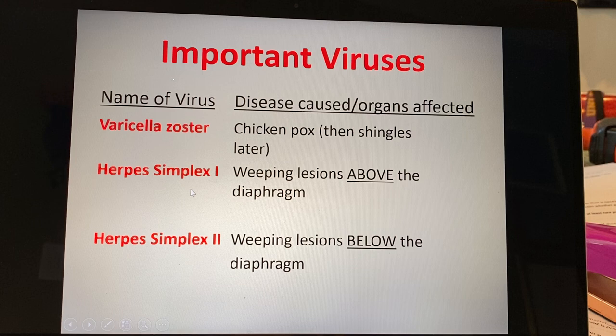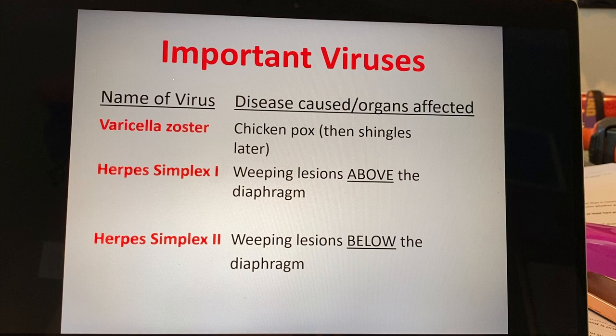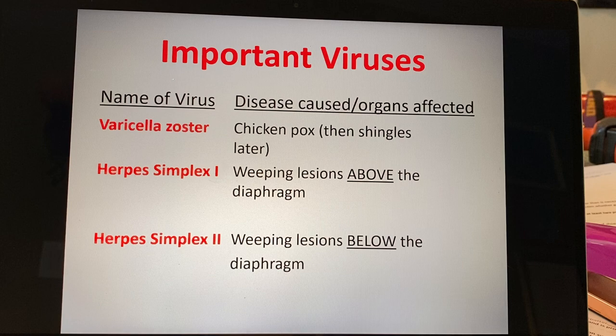Herpes simplex occurs in two major forms — simplex one and simplex two. We define these as being weeping lesions, meaning they kind of look like blisters that are full and can release liquid. When they're weeping, that's when it's really contagious, so you want to try to stay away from other people. Simplex one tends to cause lesions above the diaphragm — so if any of you suffer from recurrent cold sores, that's herpes simplex one. Herpes simplex two causes weeping lesions below the diaphragm — think genital herpes.